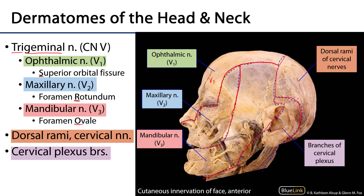So V1, V2, and V3 for the face. These patterns are going to be clinically useful in one particular instance: when an individual has a herpes zoster infection. With herpes zoster, it's shingles — a reactivated chickenpox virus that is usually latent in the spinal nerves, but when reactivated it presents as itchy blisters that follow the dermatomes. So the dermatomes of the face are good to know because one might presume to understand the course of a herpes infection.